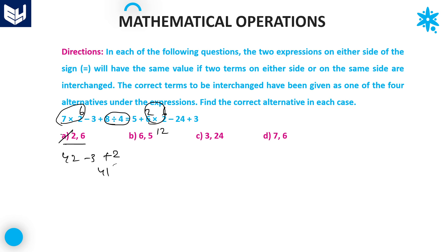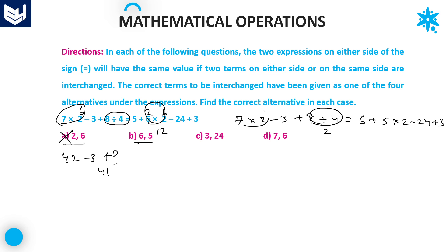Option B: 6 and 5 are interchanged. The left hand side expression becomes 7 into 2 minus 3 plus 8 divided by 4. First priority: division gives 2, then multiplication gives 14. 14 minus 3 plus 2 gives 13 — left hand side is 13. For the right hand side, multiplication gives 16, then 16 plus 3 is 19, and 19 minus 24 gives a negative value. Both sides are not equal, so eliminate option B.